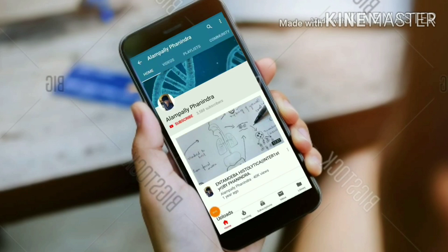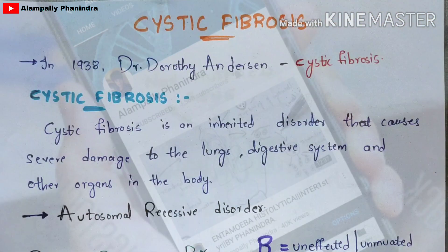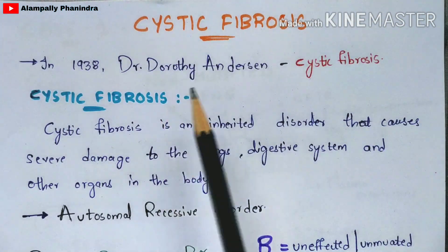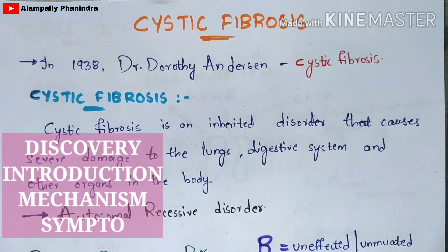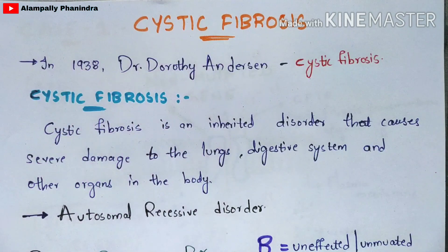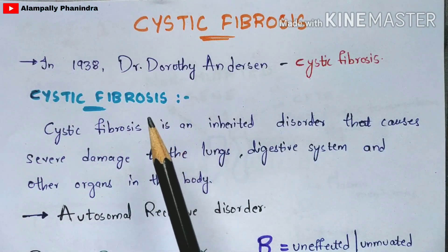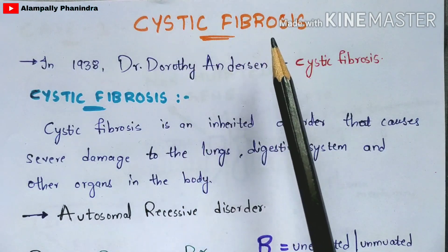Hi friends, if you like my videos, subscribe to my channel and press the bell icon for the latest updates. In this video, let us discuss about cystic fibrosis. I'm going to explain the discovery of cystic fibrosis, how this recessive disorder occurs, the mutation which occurs in the appropriate gene, and the mechanism behind cystic fibrosis. Please watch the video till the end.